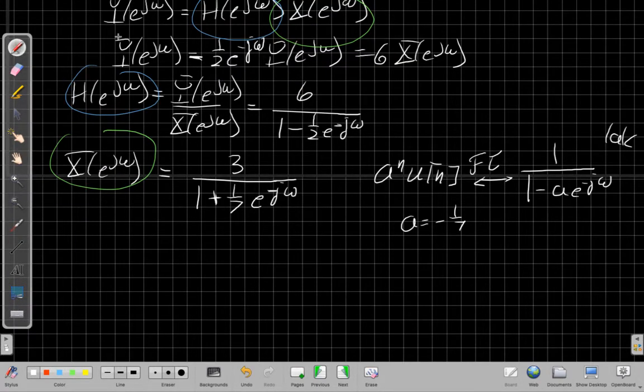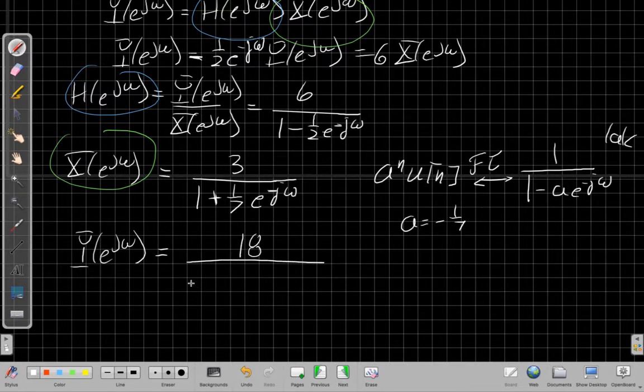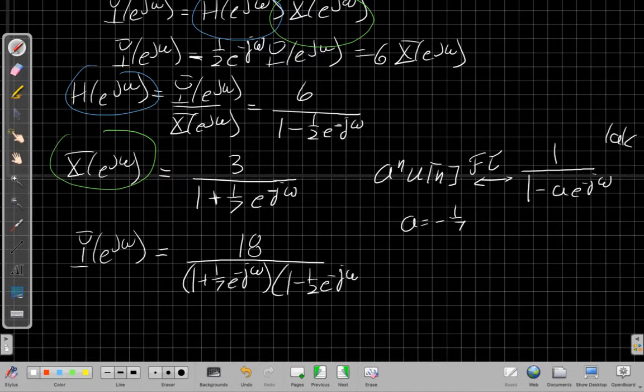When I do that, the output Fourier transform Y(e^jω) is going to be 6 times 3 in the numerator, which is 18. The denominator will have (1 + (1/7)e^(-jω))(1 - (1/2)e^(-jω)). So now I want to get from here back to the output y[n].